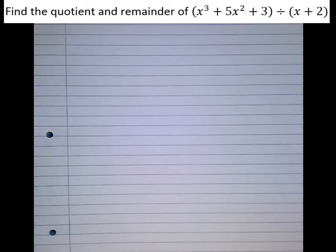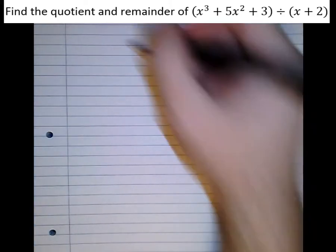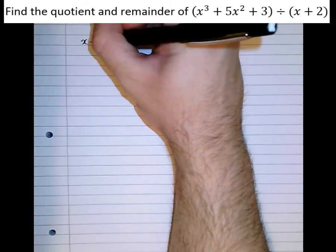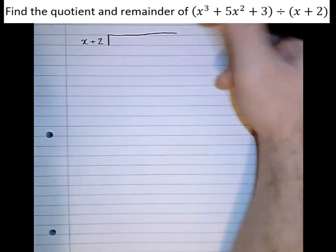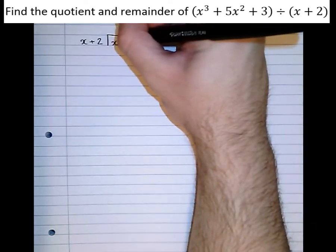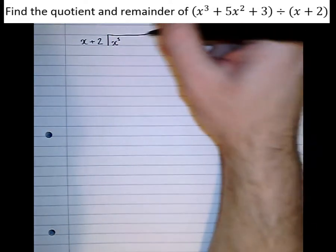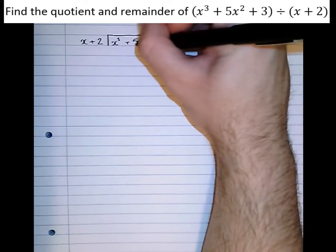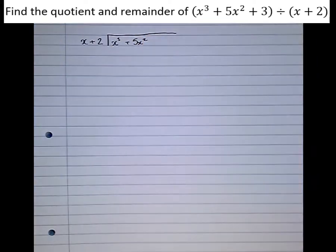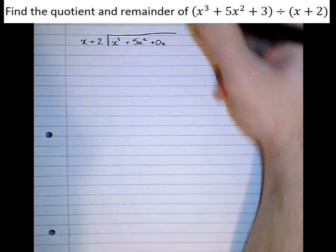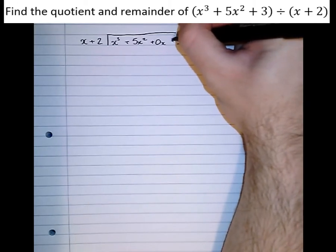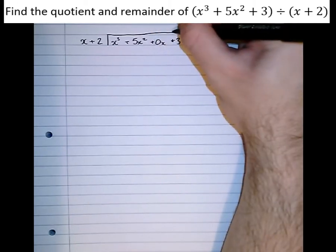We're going to write this in what's called the bus stop method, which is one method of doing this. So x plus 2, and we're dividing that into x cubed plus 5x squared. Now we've got to leave room for every term here, so we've got to leave room for the x's as well. Plus 0x, then plus 3. Make sure that every term has a place in this division.